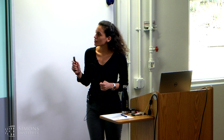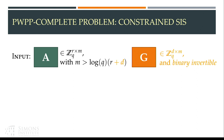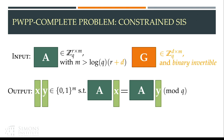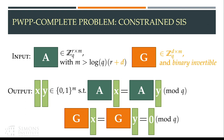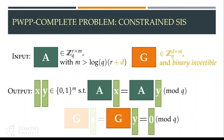Let's see how constrained SIS looks. We have the matrix A from SIS, but also an extra matrix G that has a special form we call binary invertible. The output should be X and Y such that AX equals AY mod q — the same as SIS — but additionally we need that GX and GY are both equal to zero mod q. These are different conditions: we want GX = 0 mod q and GY = 0 mod q, not just that they collide.